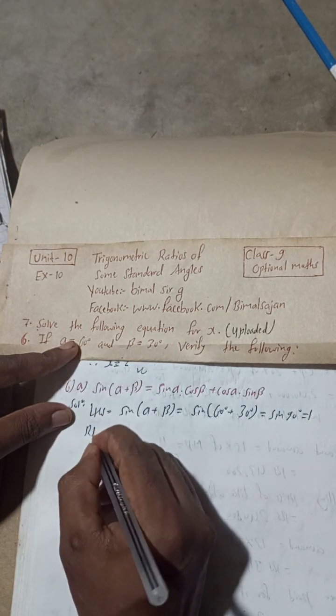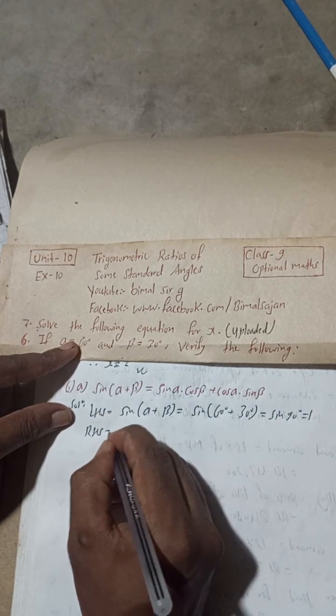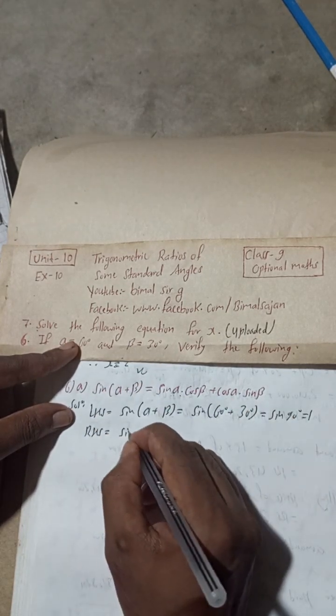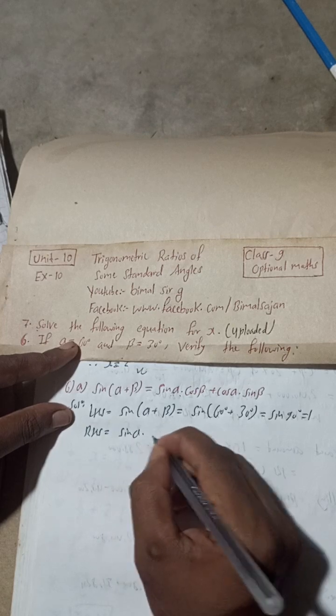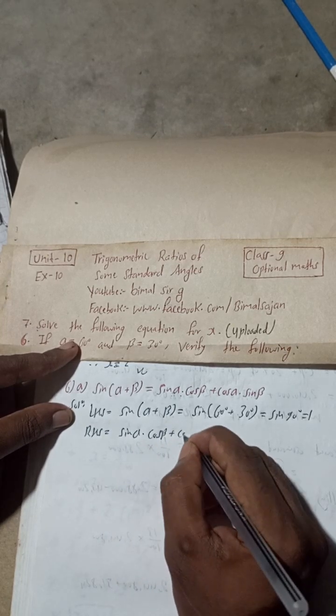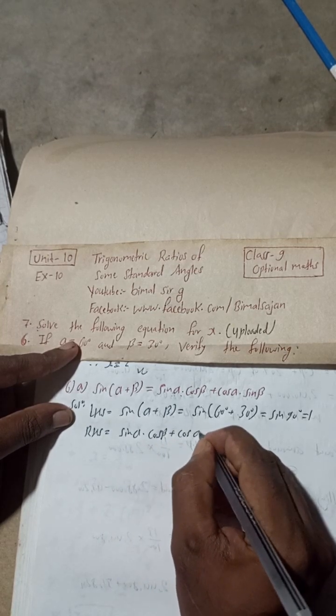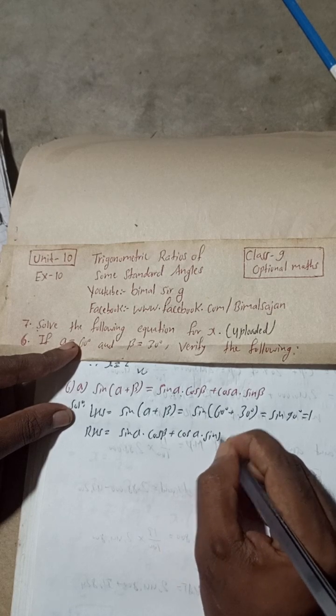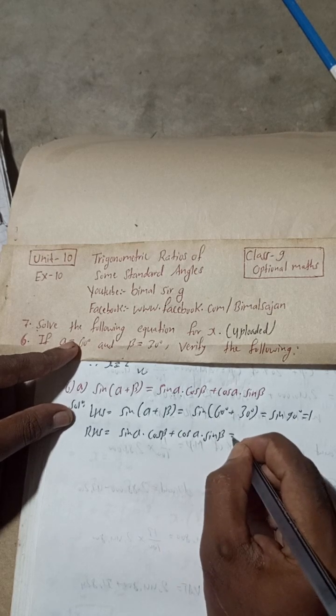Now for the RHS part: RHS is equal to sin alpha cos beta plus cos alpha sin beta.